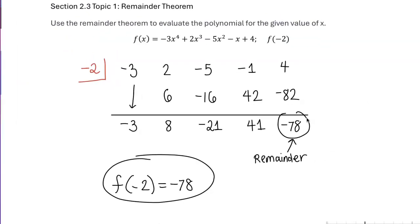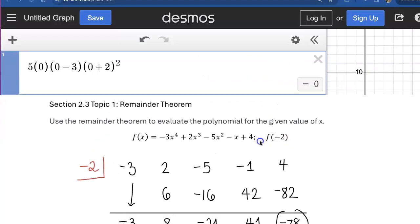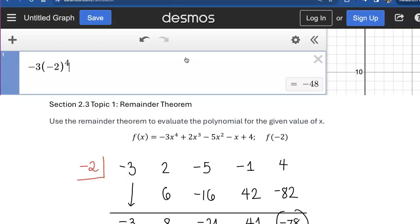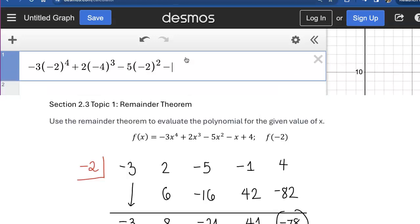Now, if you want to double-check your answer, plug negative 2 into the function using direct substitution. We get negative 3 times negative 2 to the 4th power plus 2 times negative 4 to the 3rd power minus 5 times negative 2 squared minus negative 2 plus 4.